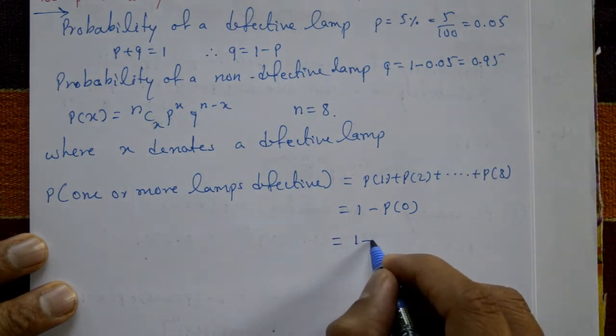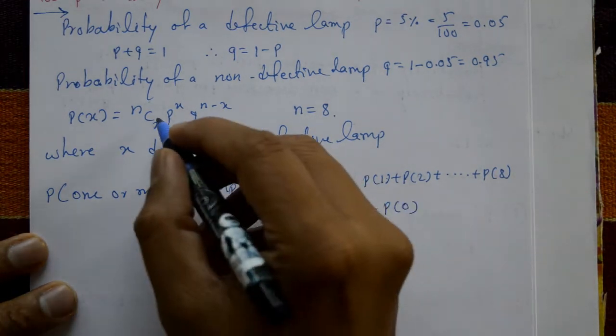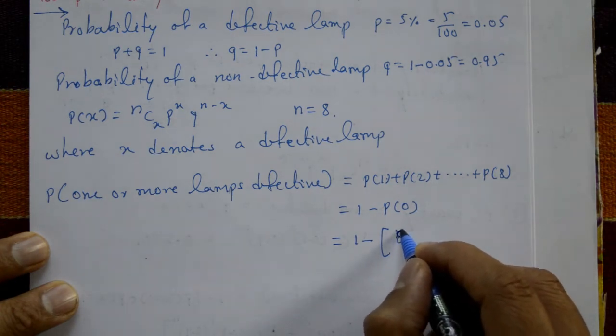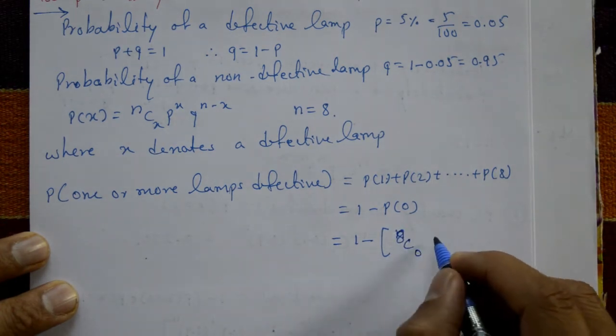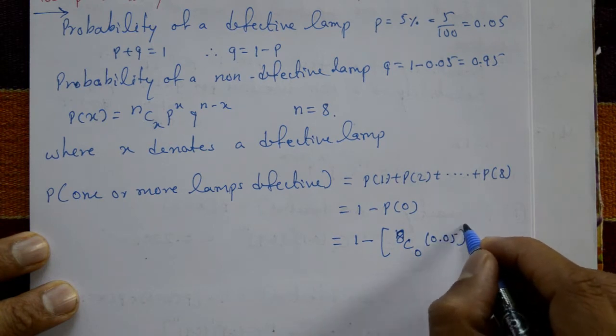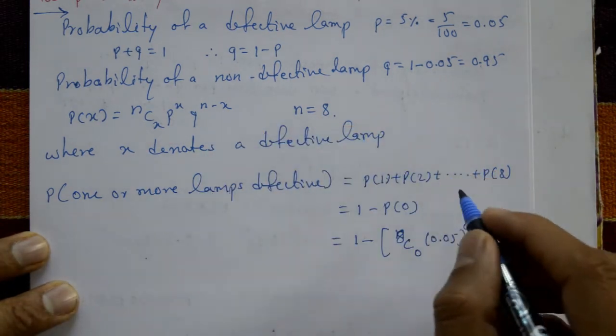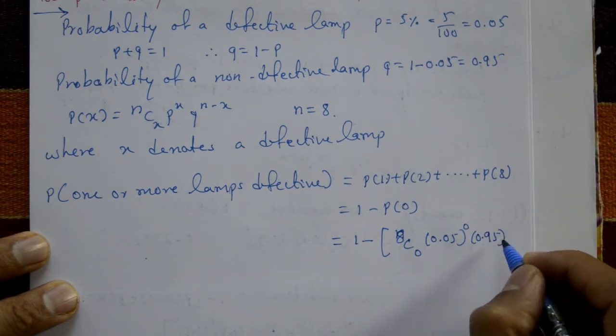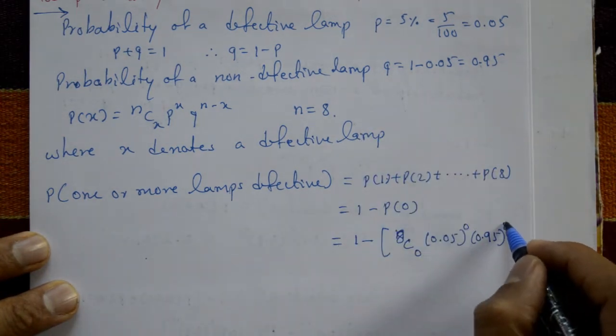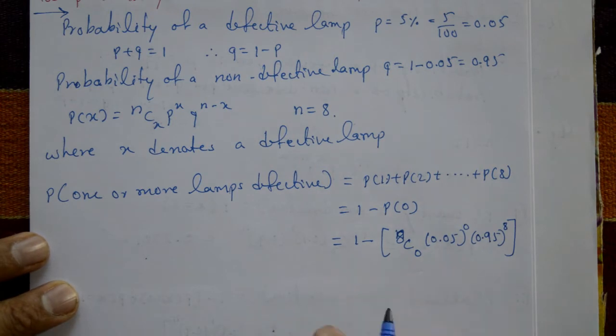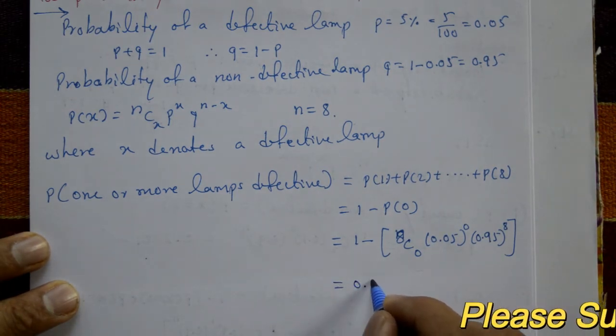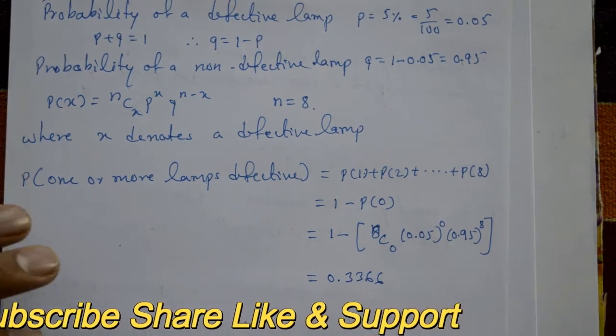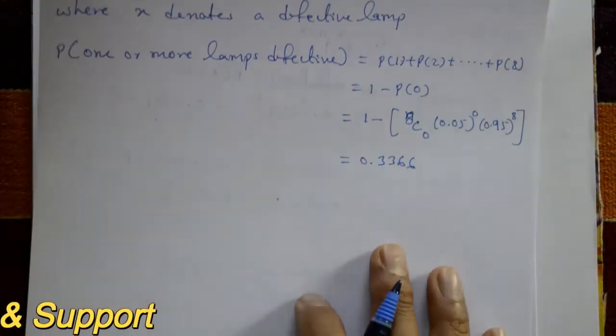One minus P of zero means X is equal to zero. That is 8C0, P is 0.05 raised to zero, Q is 0.95, n minus X is 8. This is equal to 0.3366 using calculator.